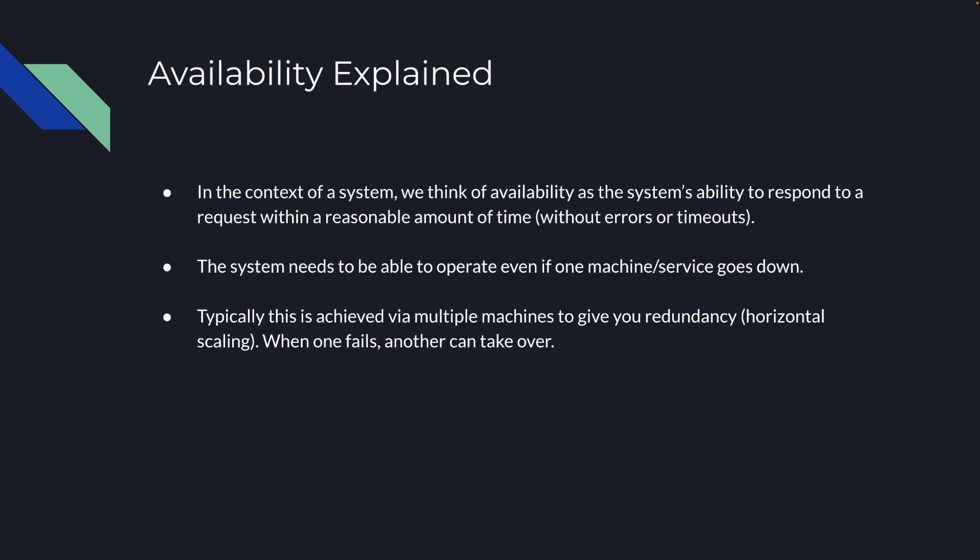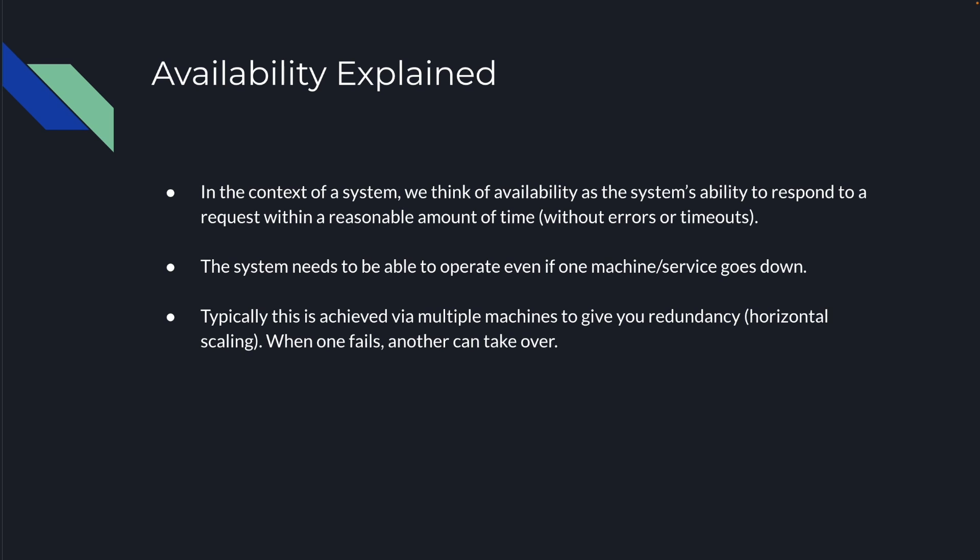Okay, what is availability? In the context of a system, we can think of availability as the system's ability to respond to a request within a reasonable amount of time, without any errors or timeouts. The system needs to be able to operate even if one machine or service goes down. Typically, availability can be achieved by having multiple machines to give you redundancy. As we talked about in the previous video on horizontal scaling, when one machine fails, another one can take over.